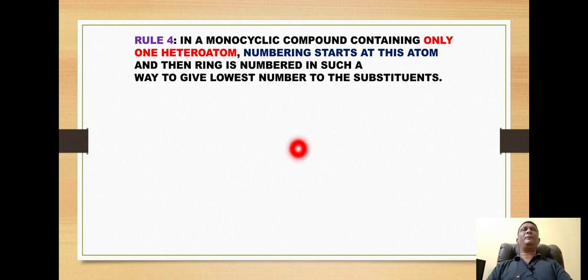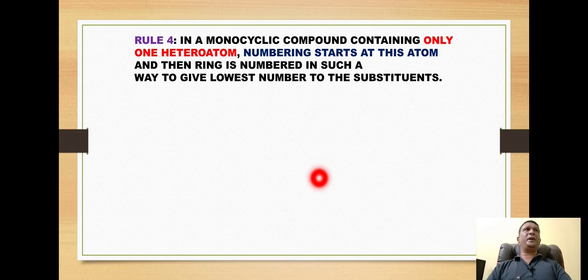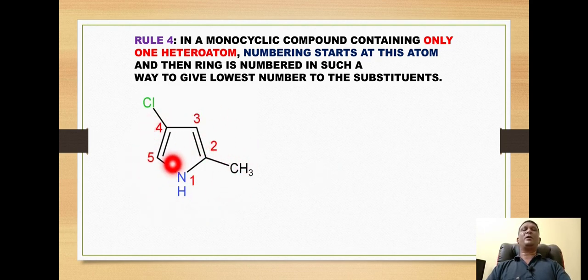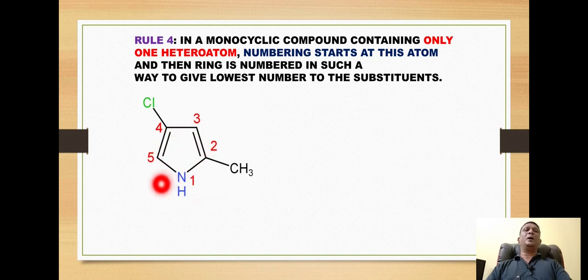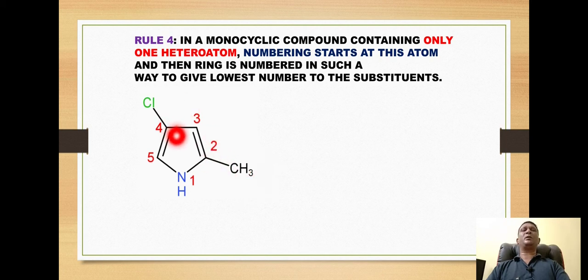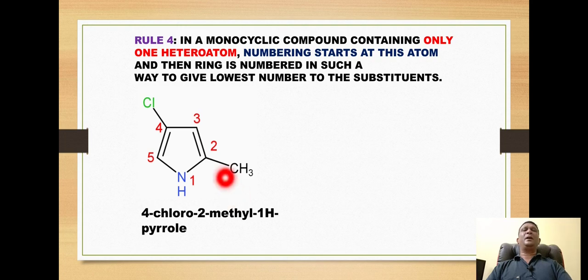Rule number four: for monocyclic rings, numbering always starts with the heteroatom, and the ring is numbered to give the lowest numbers to substituents. For example, in this five-membered ring with one nitrogen, numbering starts at nitrogen as position 1, then 2, 3, 4, 5. We number in the anti-clockwise direction because the substituent occurs first at position 2, then at position 4. The name of this ring is 4-chloro-2-methyl-1H-pyrrole.